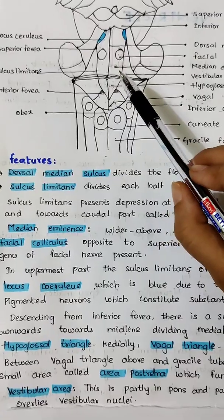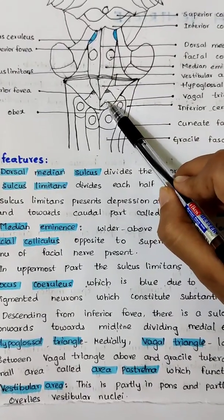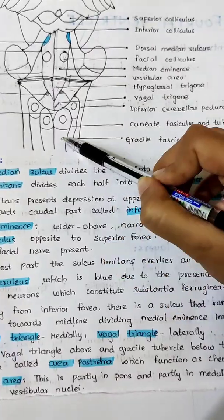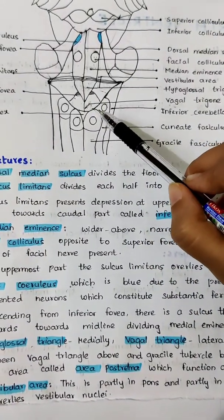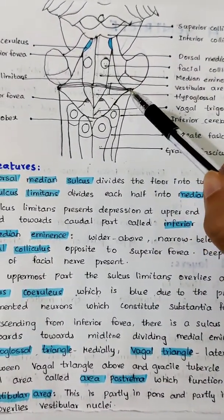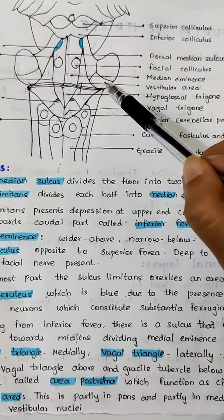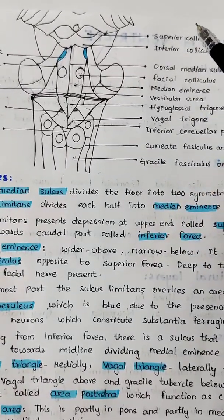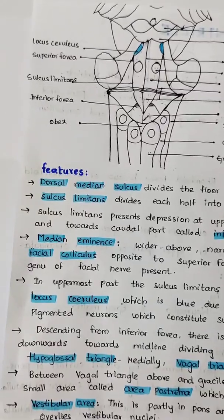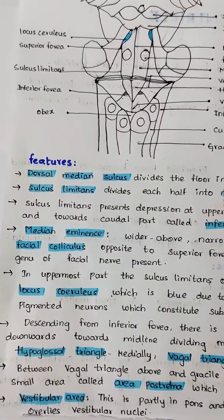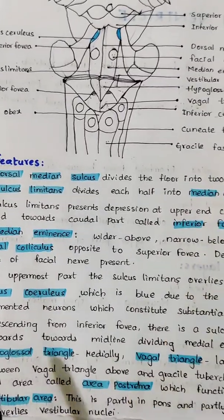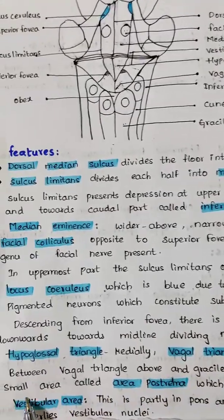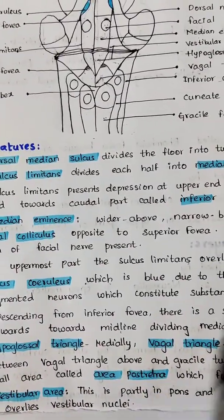Between the vagal triangle above and the gray cell tubercle below, there is an area called the area postrema, which has the function of a chemoreceptor. Finally, the vestibular area is partly in the pons and partly in the medulla, and it overlies the vestibular nuclei.